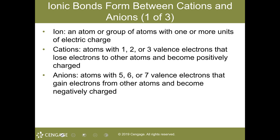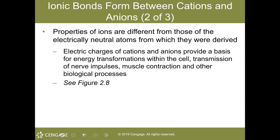Whereas the anion forms when you have the gain of a valence shell electron, and by gaining that negative charge, it then becomes negatively charged. Anions are negatively charged as opposed to cations, which are positively charged.